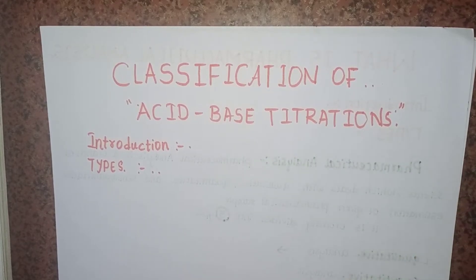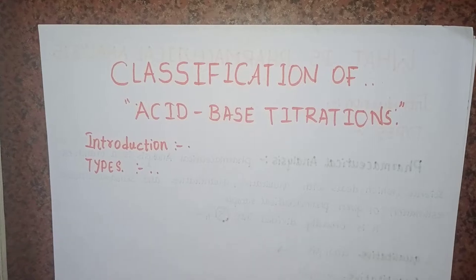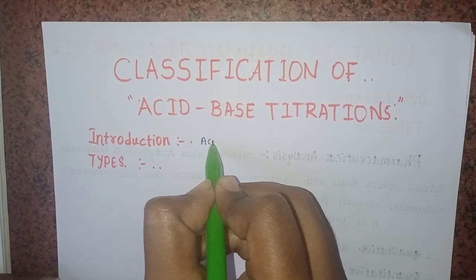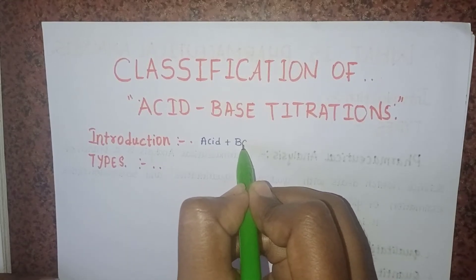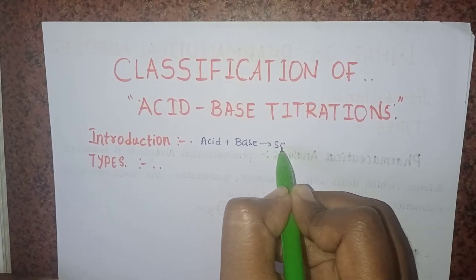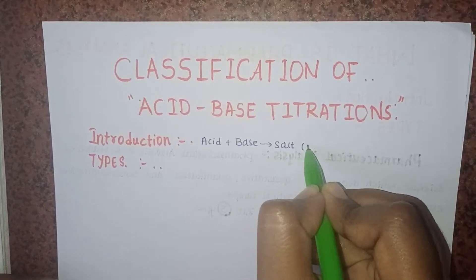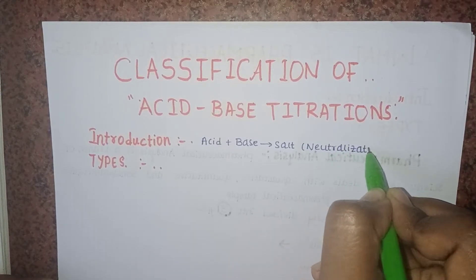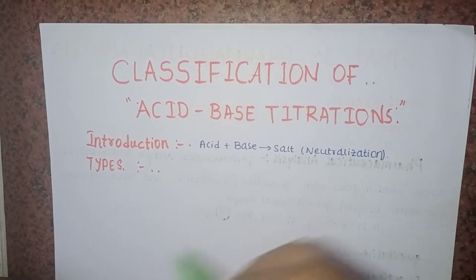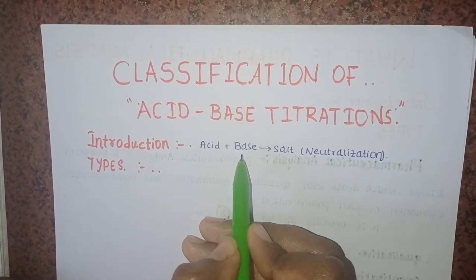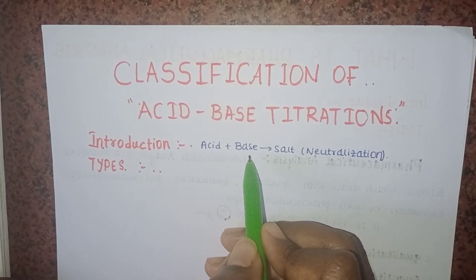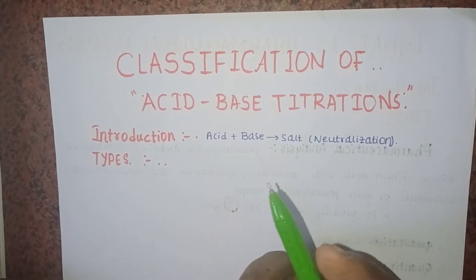First, acid-base titrations are called as neutralization titrations. Neutralization is called as an acid-base titration. Whenever an acid is going to react with the base, it forms a salt. So it is known as neutralization, and it is also called as acid-base titrations. Acid-base titrations use acid and base, and those two form a salt, which is why they are called neutralization titrations.